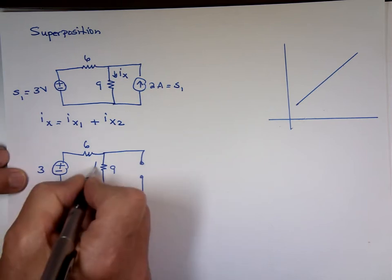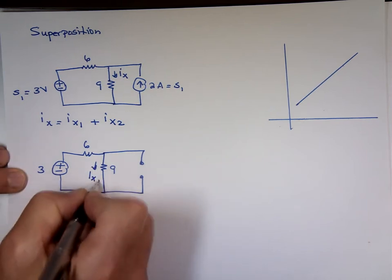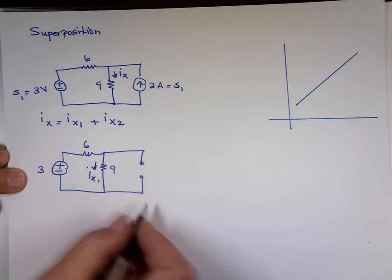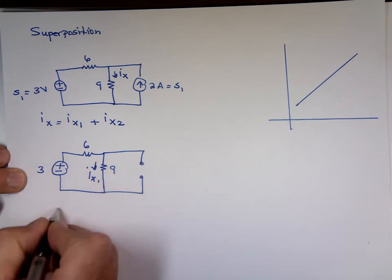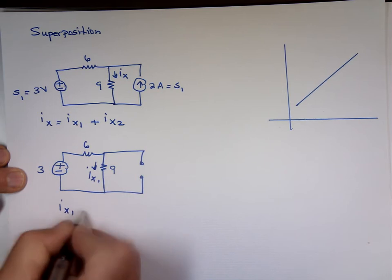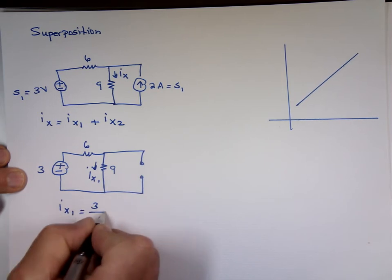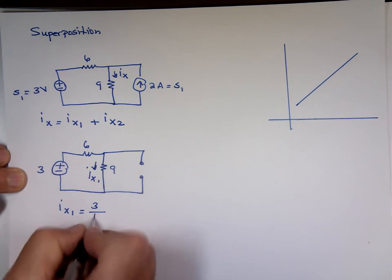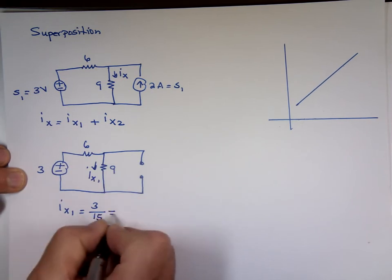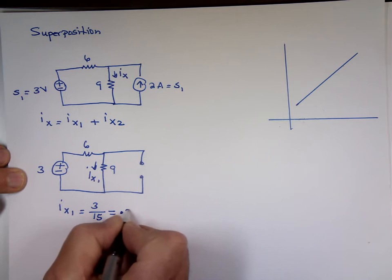So this is i of x1. Well, I can combine because there's nothing going that way. i sub x1 is going to be 3 divided by the sum of these, because you can combine these two into one resistor which is 15. That's 1 over 5, which is 0.2 amp.